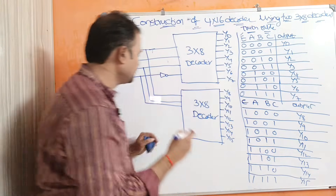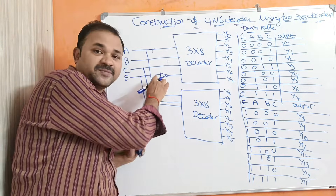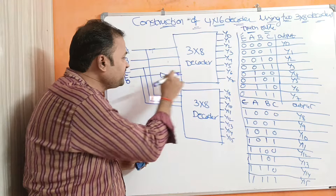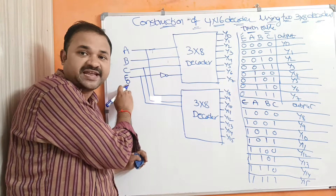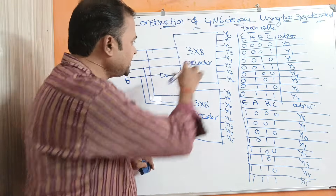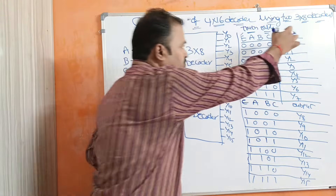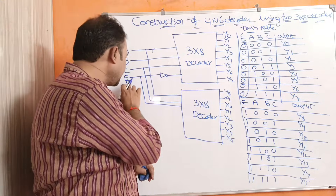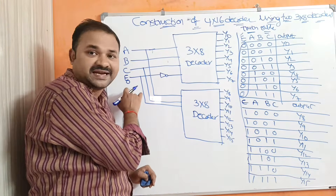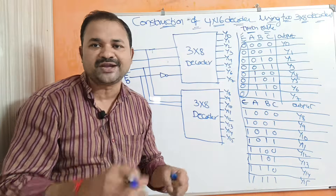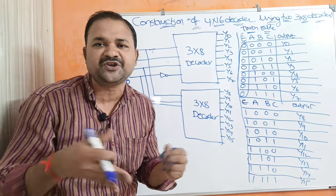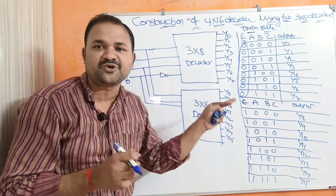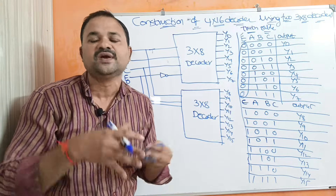If the enable input is 0, we complement that enable input. The complement of 0 is 1, so that 1 will be passed to the first decoder. With enable=1 passed to the first decoder, that decoder becomes active and produces output. So when the enable input E is 0, complementing it gives 1, which activates the first 3 by 8 decoder.